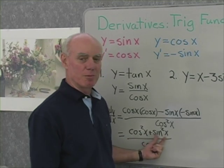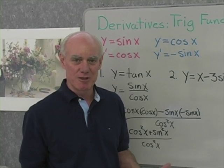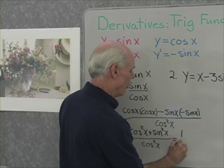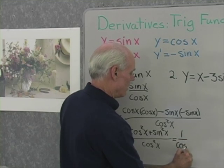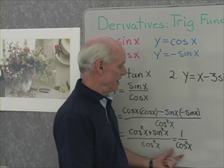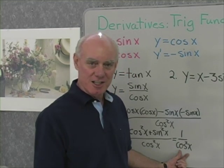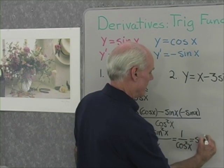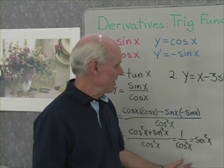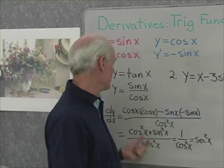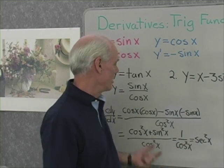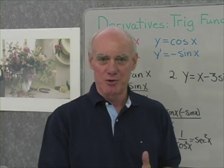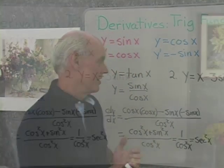Of course, cosine squared plus sine squared — you know from your trigonometric identities — that's just 1. So this is 1 over cosine squared x, and 1 over cosine is secant, so this turns out to be secant squared x. The derivative of tangent is secant squared. You can always go through this derivation process, though you probably have that memorized.